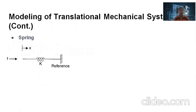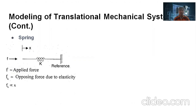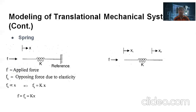The third basic component is the spring. This is the physical model of the spring. When the force is applied on the spring, the opposing force due to elasticity is directly proportional to the displacement. Therefore, Fk = K · x, and by the net force balance equation, F = Fk = K · x. In this example, one end of the spring is fixed. When both ends of the spring are free, the opposing force is directly proportional to the differential displacement x1 − x2. Therefore, Fk = K(x1 − x2) and F = Fk = K(x1 − x2).